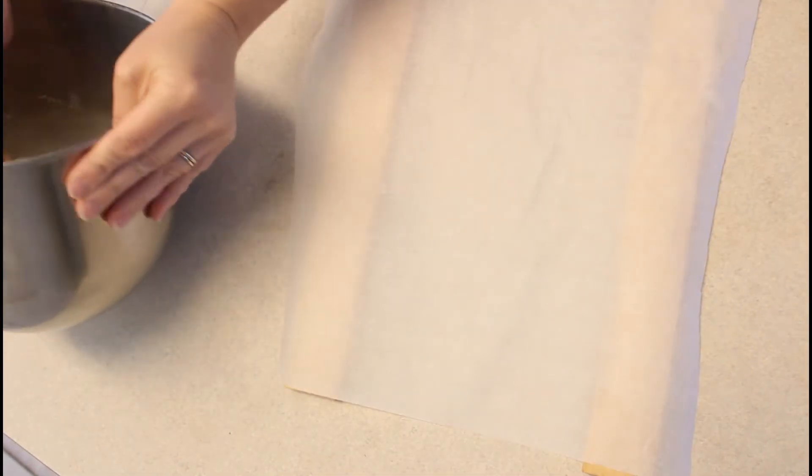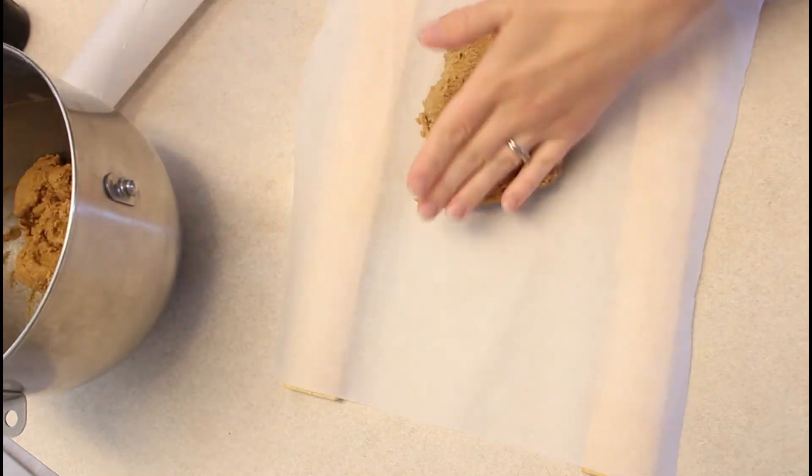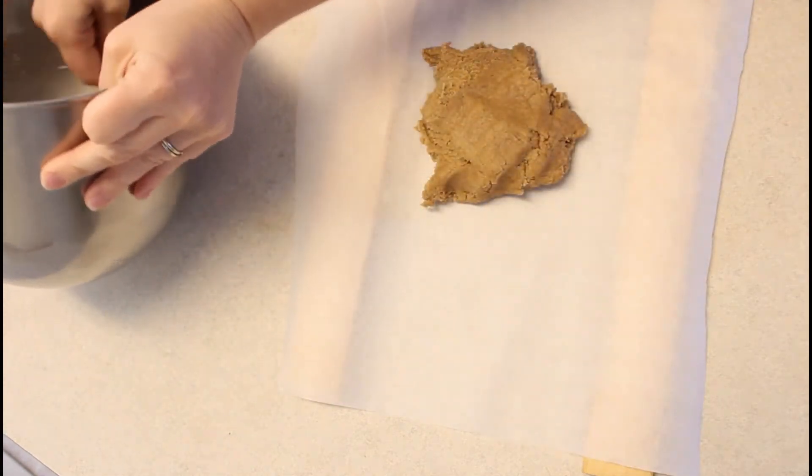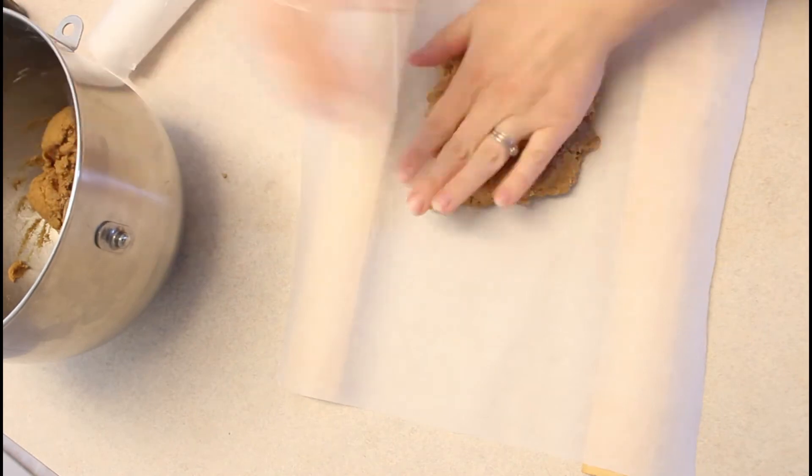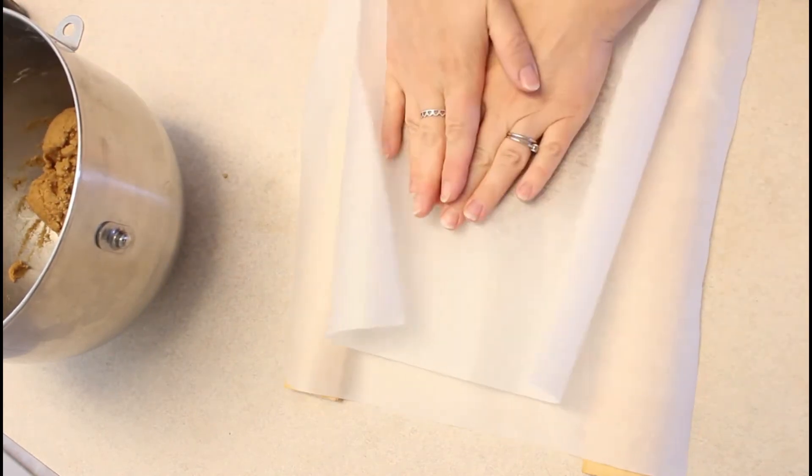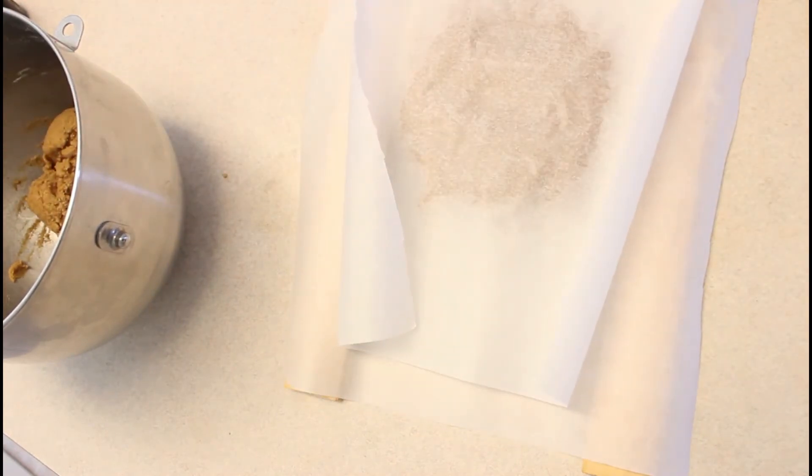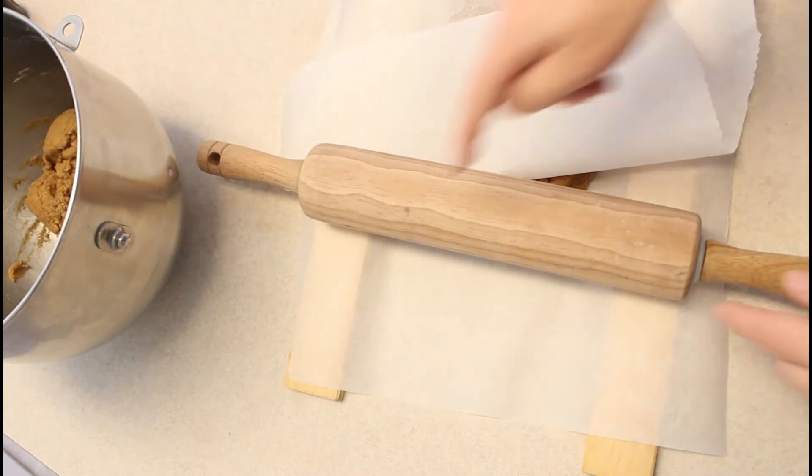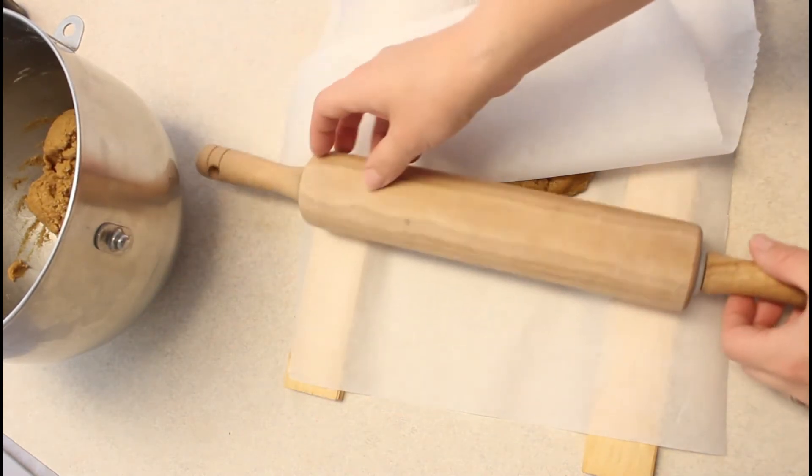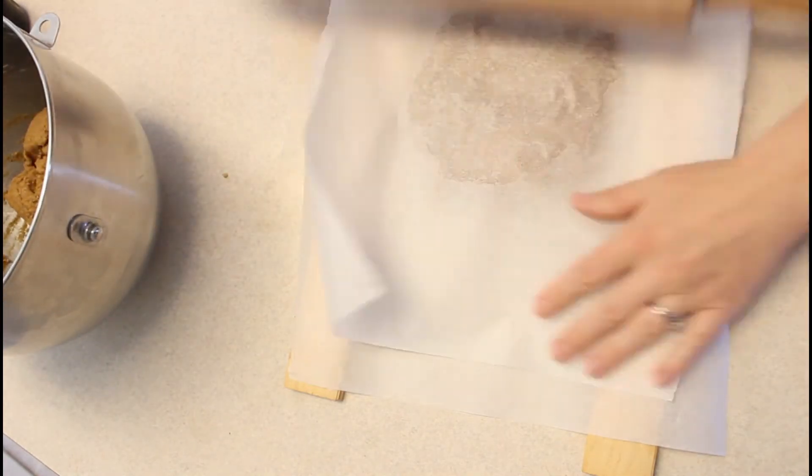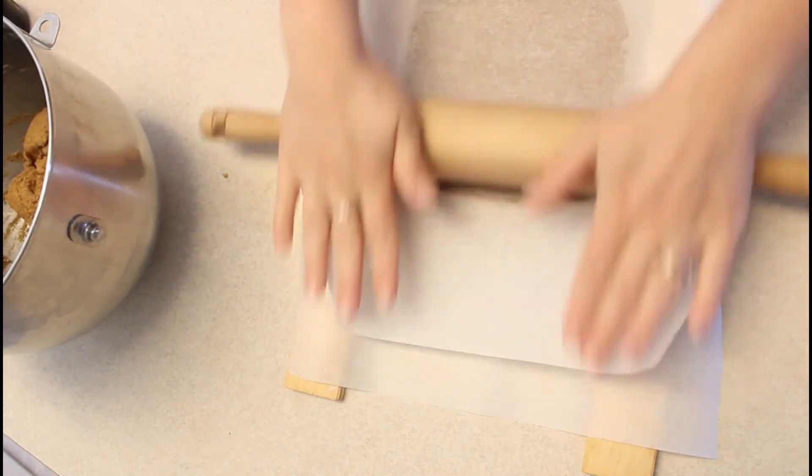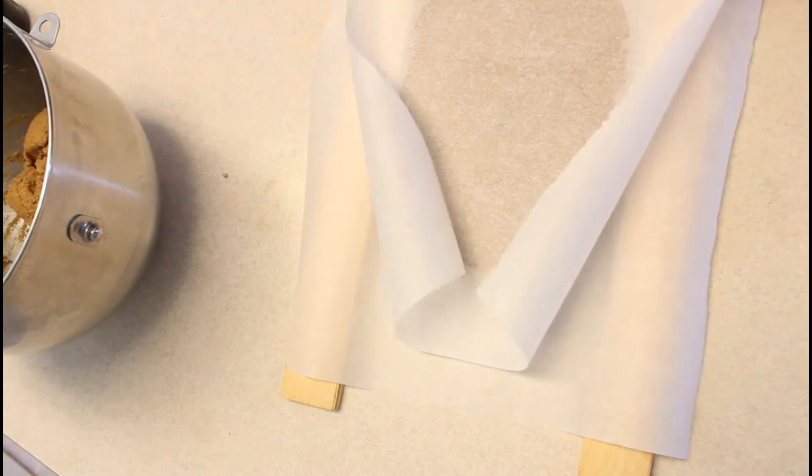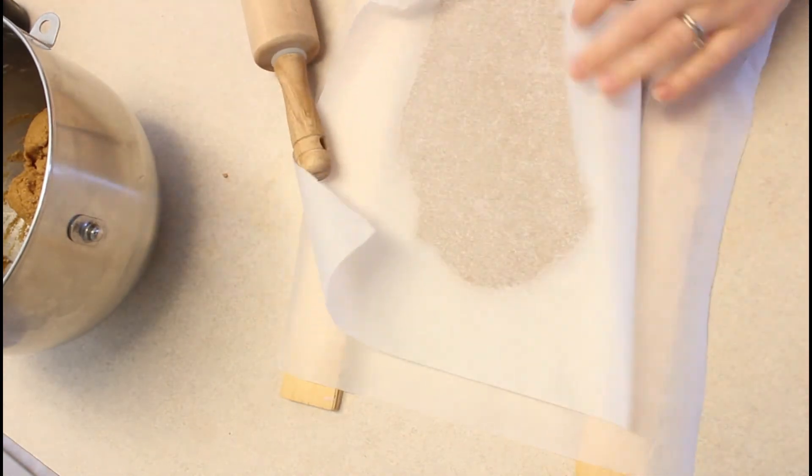Roll your dough out in between two pieces of parchment paper or wax paper. This way you don't need extra flour to roll out the cookie dough and you don't even have to wash your rolling pin when you're done. Bonus! You can see that I'm keeping the rolling pin on top of the wooden guides on either side. Roll the body of the rolling pin with your hands rather than holding onto the handles because it'll slip around too much on the parchment paper.